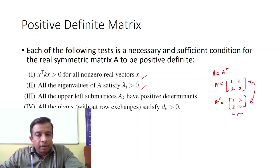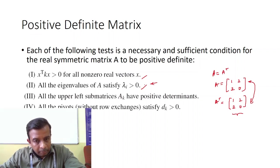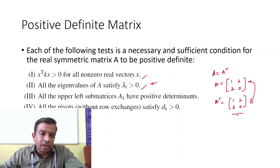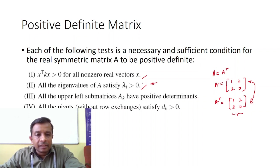I generally prefer to start checking with the eigenvalue condition. If we get negative eigenvalues, we can surely say that the given matrix is not positive definite, unless explicitly asked to test all conditions. This can be a litmus test. Similarly, x transpose K x can also quickly indicate whether the result is greater than 0, serving as an acid test. These two are generally quick tests to check whether a real symmetric matrix A is positive definite or not.